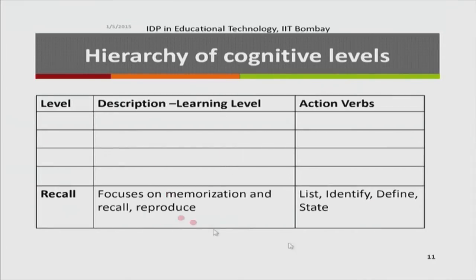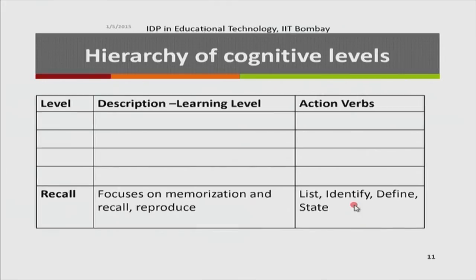Each level is associated with action verbs. When we write learning objectives, each must contain an action verb that signifies the performance outcome — the student should be able to write, remember, identify, and so on. For the recall level, typical action verbs are: list, identify, define, state. One example of a recall-level learning objective is: student will be able to draw the logic symbol of an AND gate — because the student simply recalls and reproduces that symbol from memory.